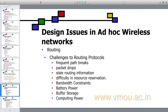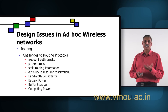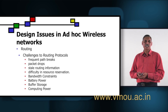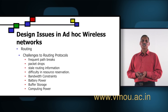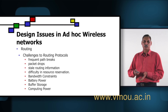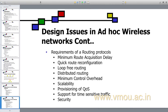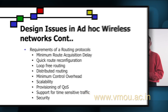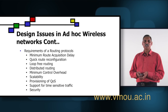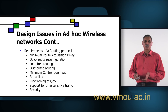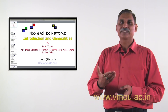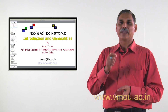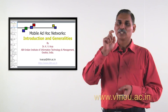Design issues in mobile wireless ad hoc networks include routing, with challenges such as frequent path breaks due to mobility, packet drops, stale routing information, difficulty in resource reservation, bandwidth constraints, battery power, buffer storage, and computing power. Requirements for a routing protocol include minimum route acquisition delay, quick route reconfiguration, loop-free routing, distributed routing, minimum control overhead, scalability, provision for quality of service, and support for time-sensitive traffic and security. Overall, wireless ad hoc networks are very useful for real-life applications today, with the biggest challenges being routing, battery life, and security.